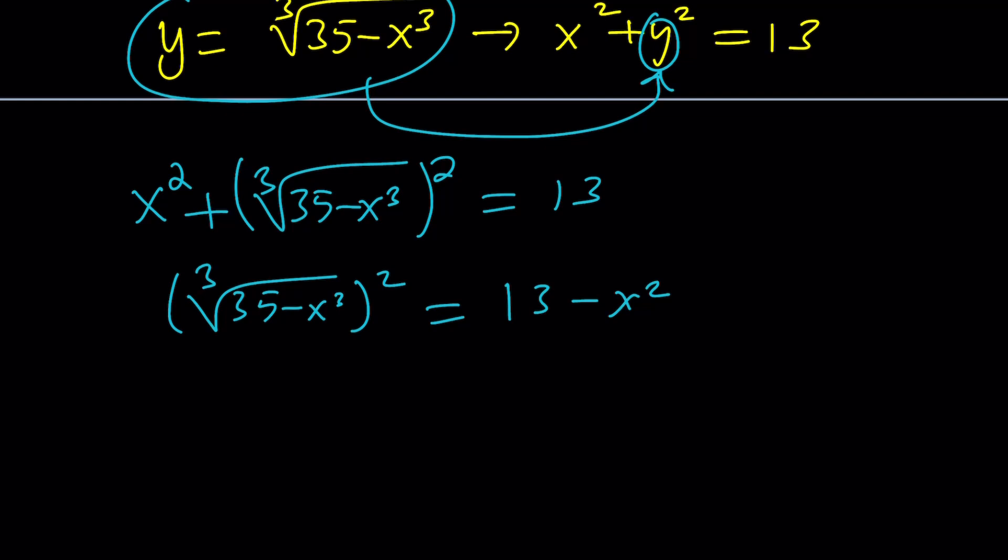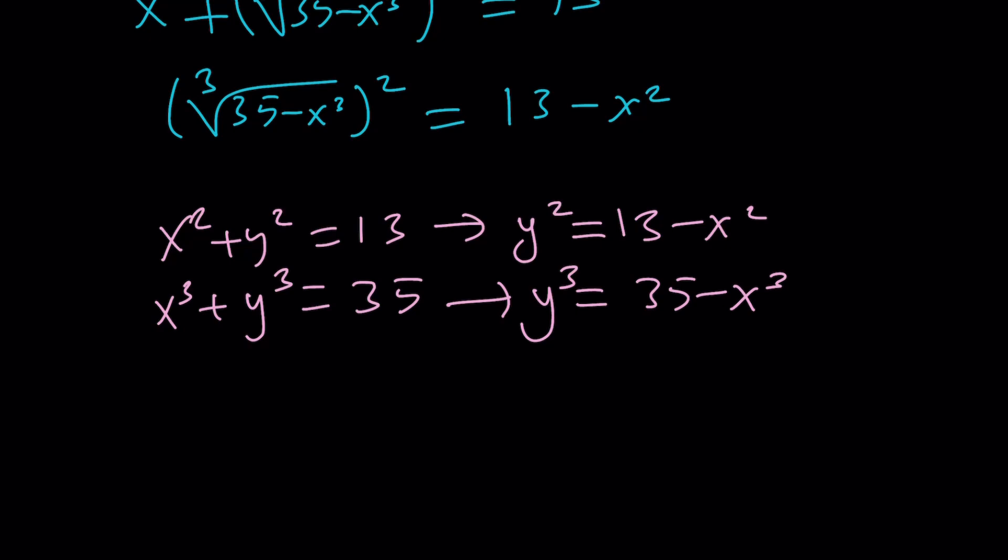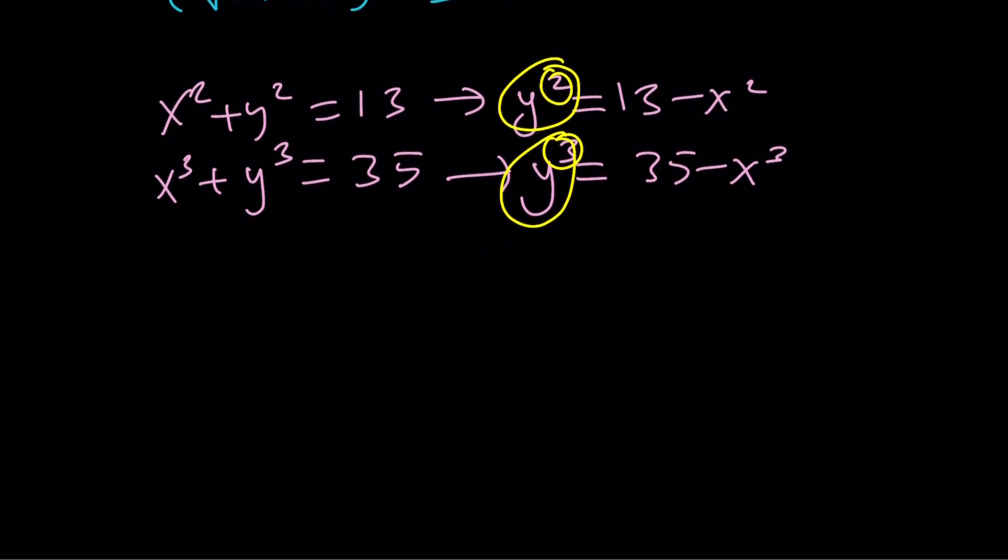This is going to be our 1b. With the 1b, we're going to do the following. We have two equations, sum of squares and sum of cubes. From each one, we're going to isolate the y term. So y squared can be written as 13 minus x squared, and y cubed can be written as 35 minus x cubed. Now notice that y squared and y cubed, if you look at their exponents, 2 and 3, what's the least common multiple of 2 and 3? It's 6. So we can do the following. If we raise y squared to the third, that gives us y to the 6. Or if we raise y cubed to the second, we also get y to the 6. So they're equal.